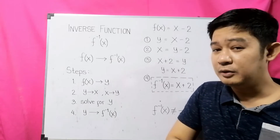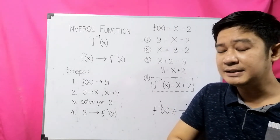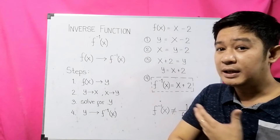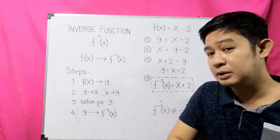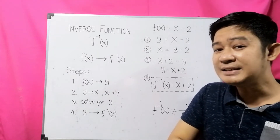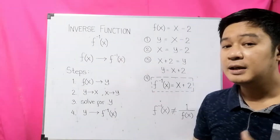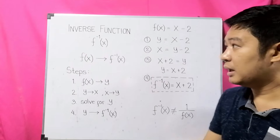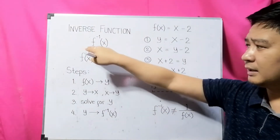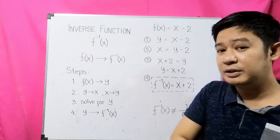The inverse of a function is simply the reverse of a function, wherein the inverse of a function has a domain with the same characteristics as the range of the original function. And the range of the inverse function has the characteristics of the domain of the original function. The inverse function is denoted by f inverse of x, written as f raised to negative 1 of x, but we read it as f inverse of x.